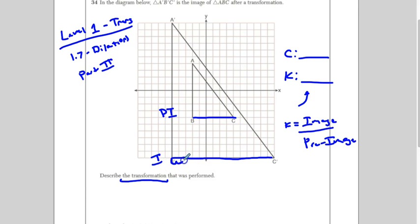So, let's count this out. This is 1, 2, 3, 4, 5, 6, 7, 8, 9, 10, 11, 12, 13, 14, 15. So, we got 15 right here, and 1, 2, 3, 4, 5, 6. This is 6. So, the scale factor is going to be 15 over 6, which could also be reduced to 5 halves. Okay? So, our scale factor is 5 halves, or you can even write 2.5.